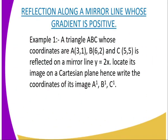Reflection along a mirror line whose gradient is positive. Example one: we have a triangle ABC whose coordinates are A(3,1), B(6,2), and C(5,5). It is reflected on a mirror line whose equation is Y equals 2X. Locate its image on a Cartesian plane, hence write the coordinates of its image: the image of A, the image of B, and also the image of C.